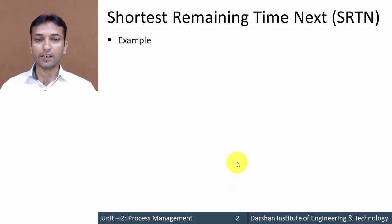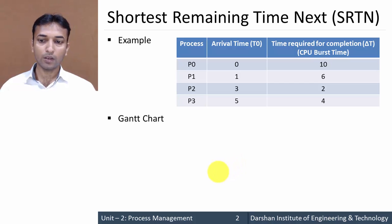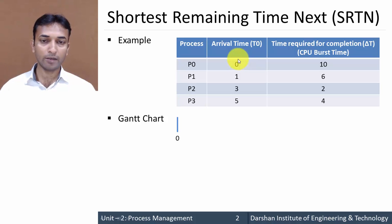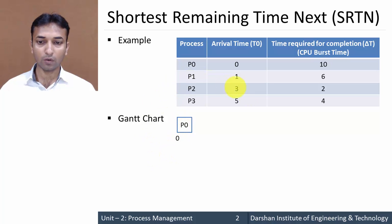Now let's move to the example of Shortest Remaining Time Next scheduling algorithm — the same example already seen in FCFS and SJF algorithms. We will draw the Gantt chart for these four processes. Initially, at time 0, only one process P0 is in the queue, so the processor is allocated to process P0.